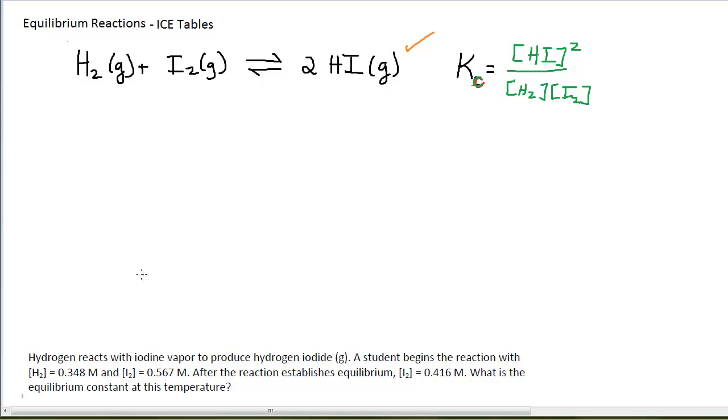The numerical information given here, the fact that hydrogen is 0.348 molarity, is not at equilibrium. That's where the student begins the reaction. That's his initial amount of hydrogen. This is the initial amount of iodine. The reaction proceeds to establish equilibrium. Once it does that, then we have a device to measure the equilibrium concentration of I2, and we find that it's 0.416.